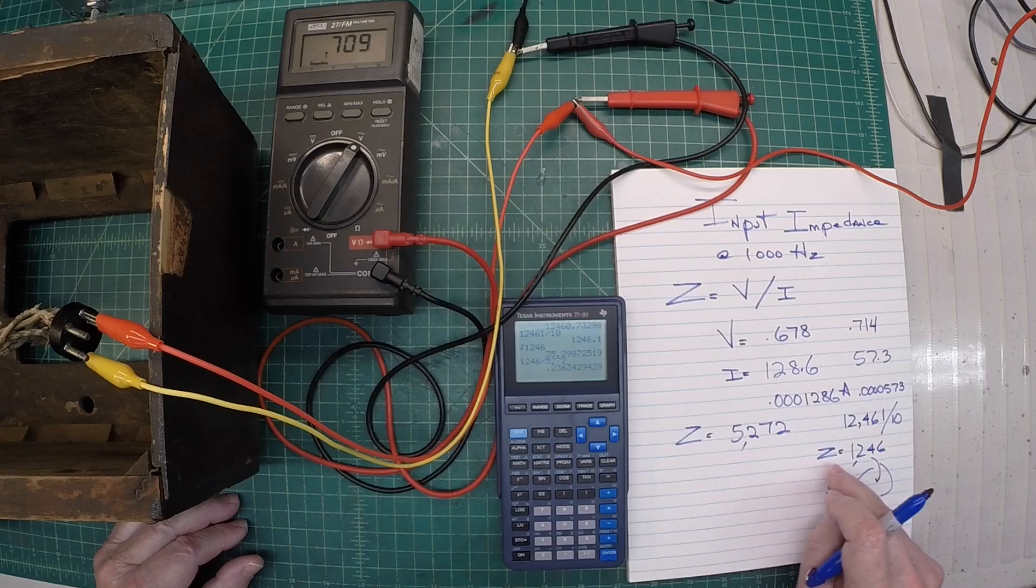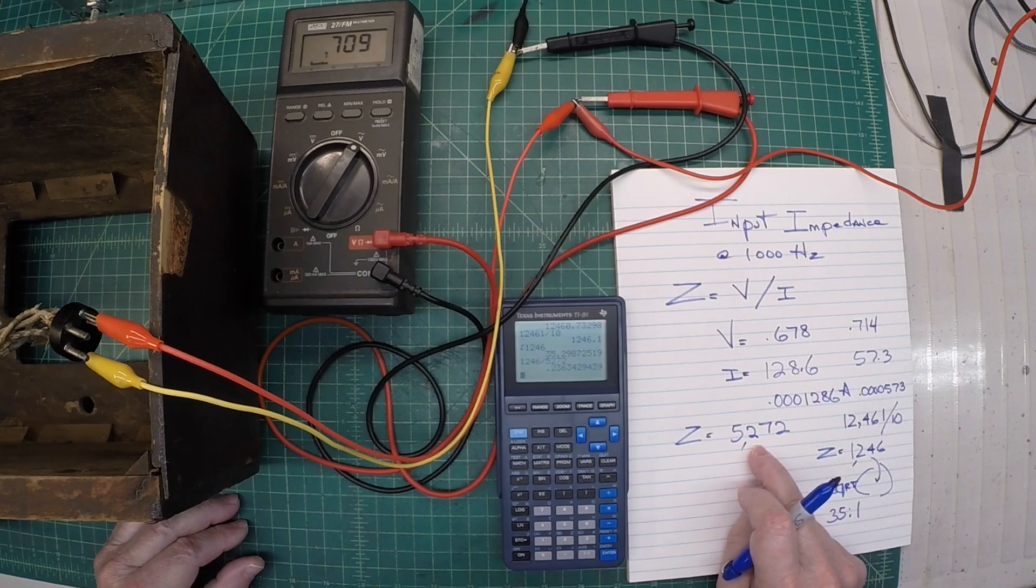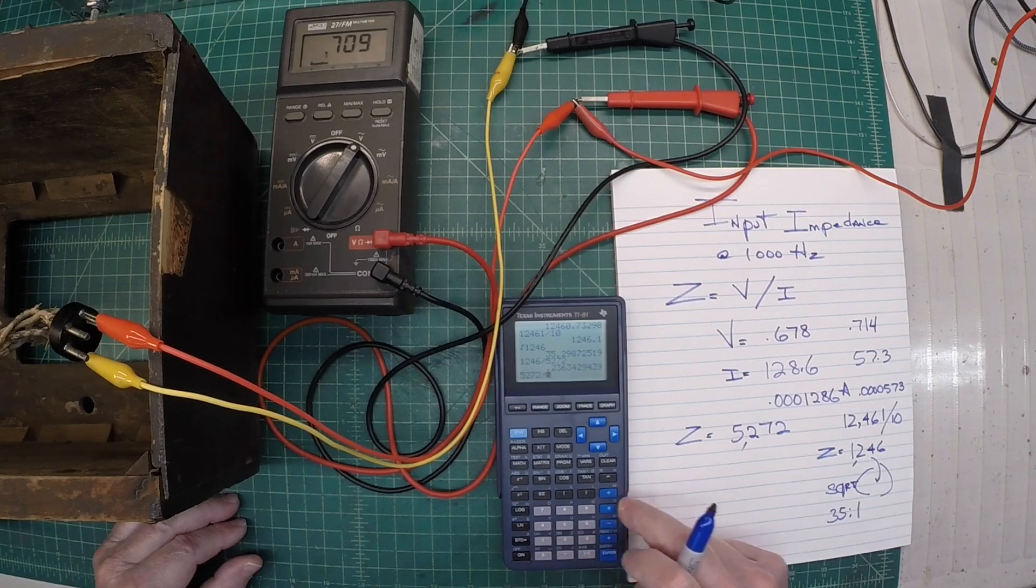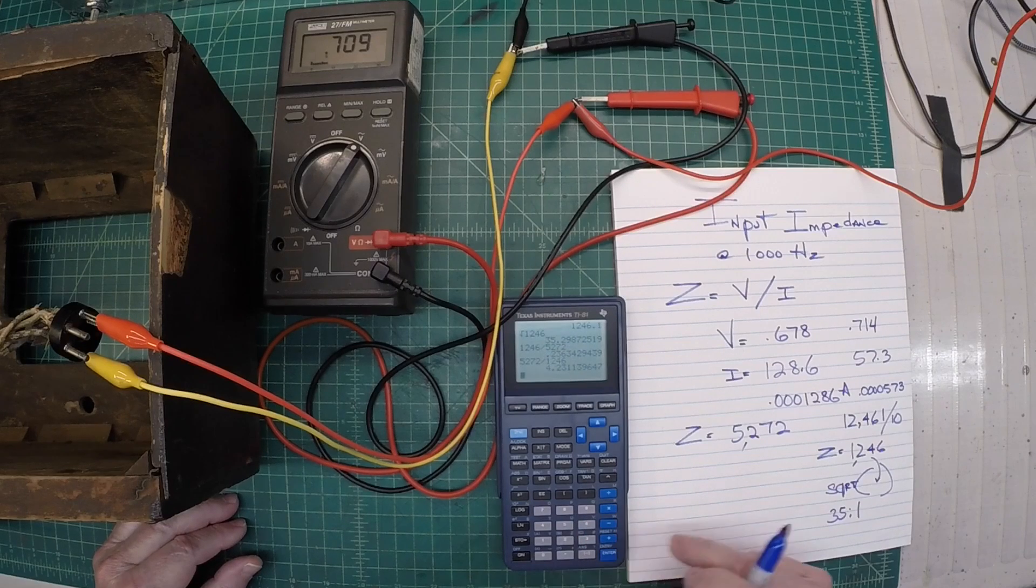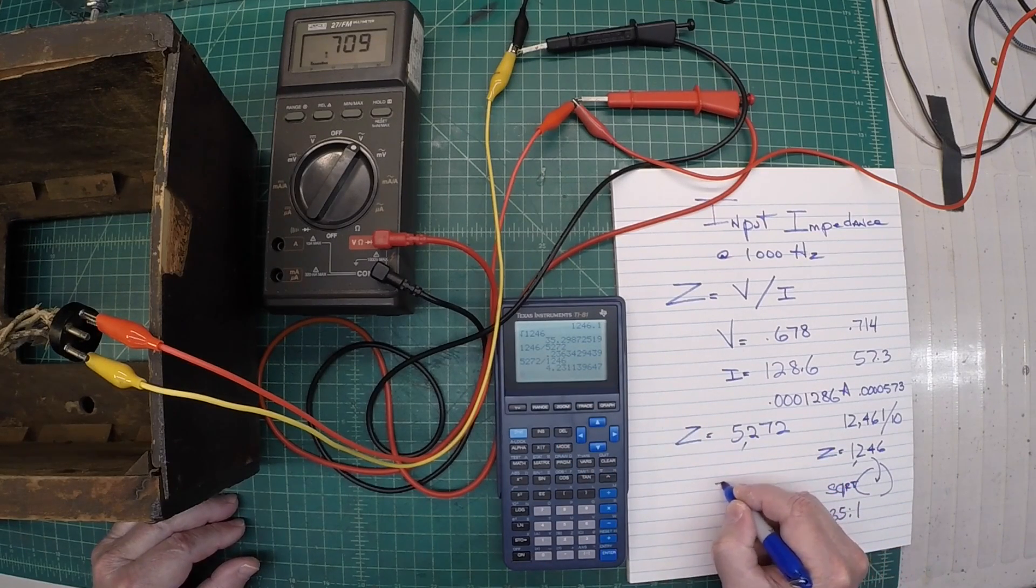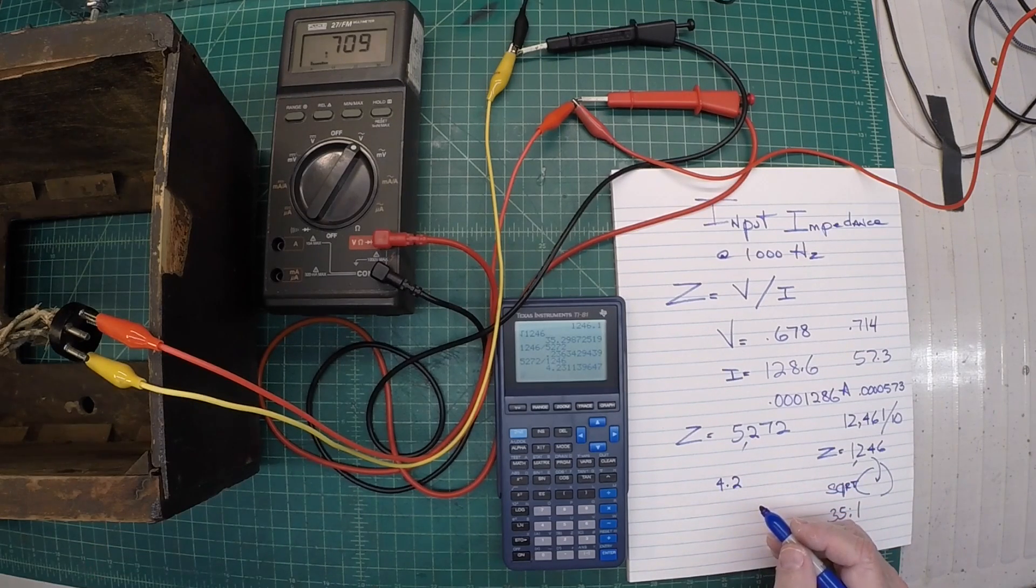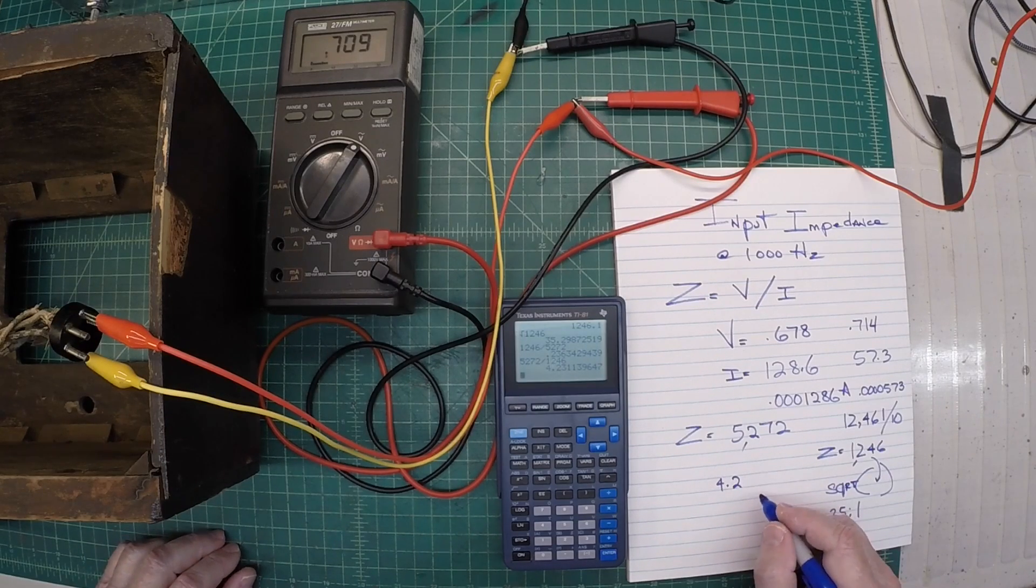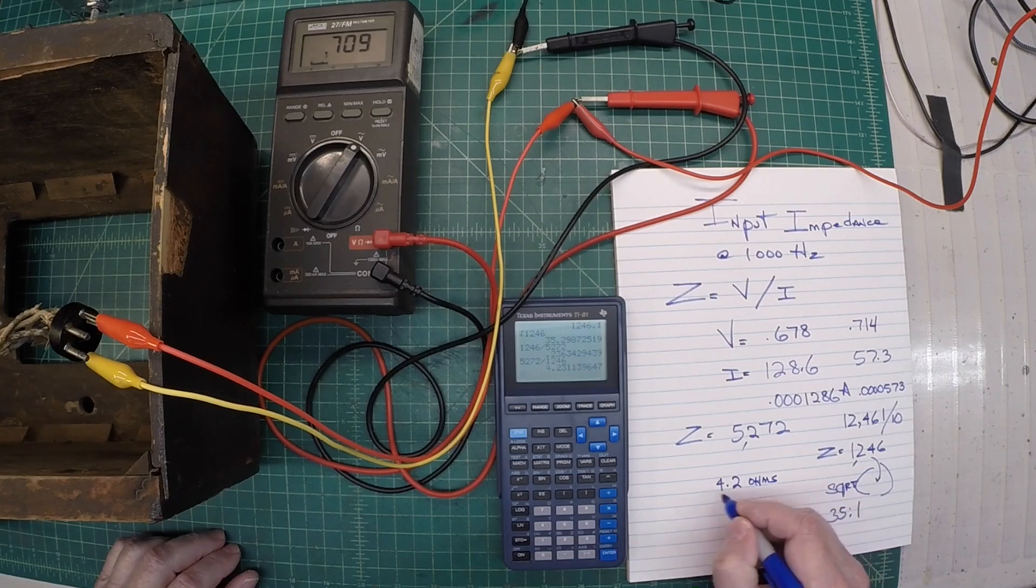Okay. To calculate the speaker impedance, all I need to do is take the original impedance that we read here, the 5272, and divide that by the 1246. And you can see that comes out to 4.2 ohms and a little change. So roughly this particular speaker that has been replaced here off to the left out of view is a 4 ohm speaker.